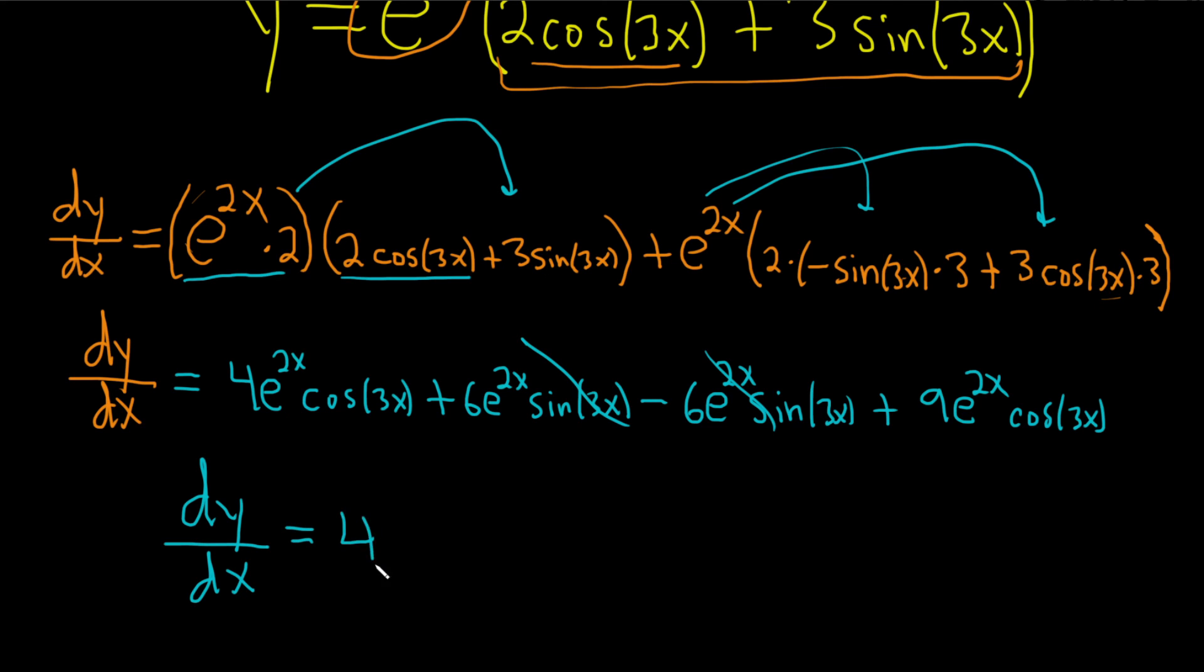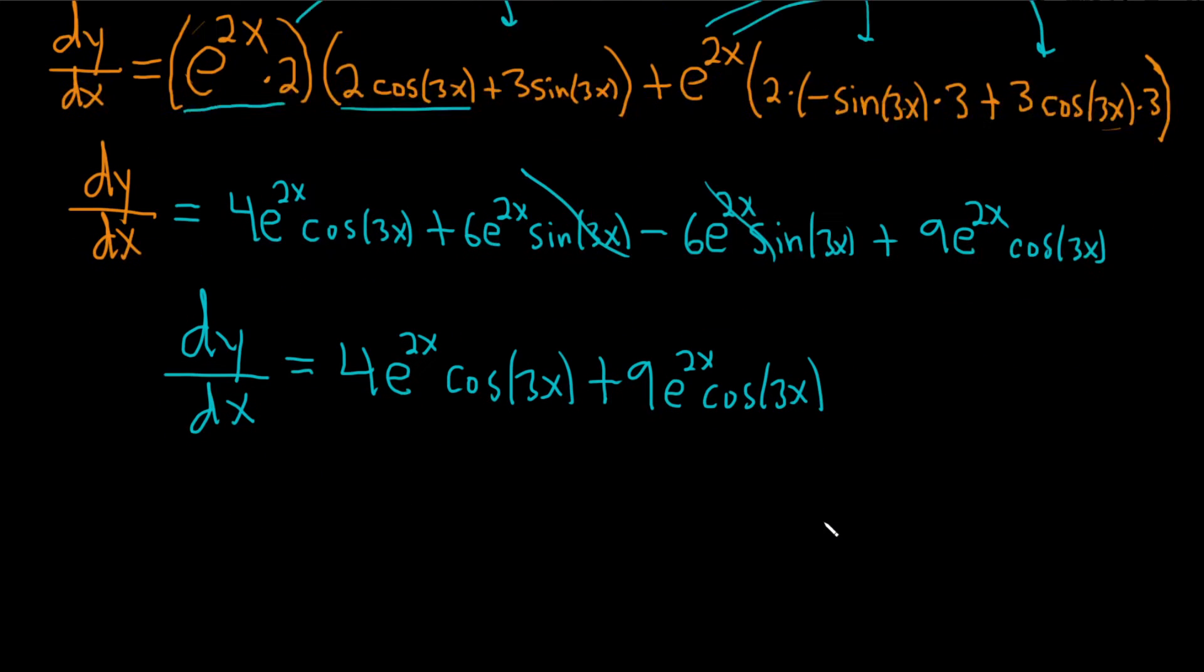is equal to 4 e to the 2x cosine 3x. And then we have 9 e to the 2x cosine 3x. I don't know why I didn't combine these. Now we're going to combine them.